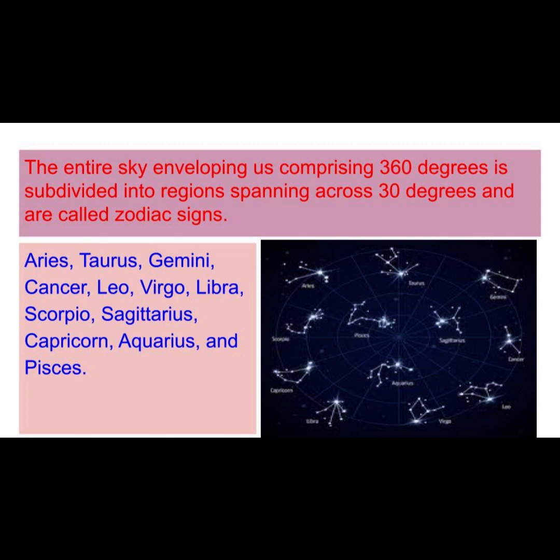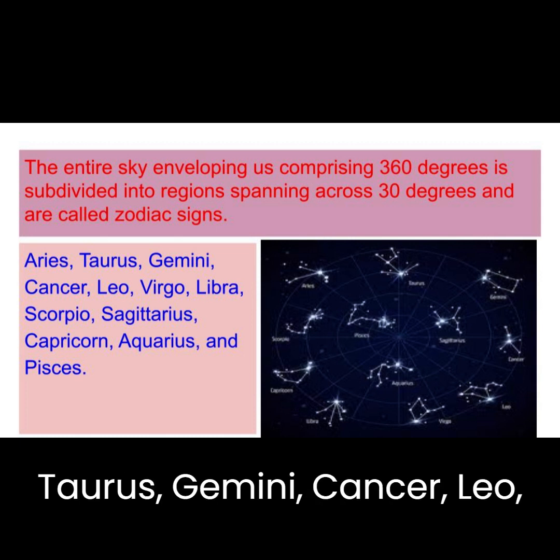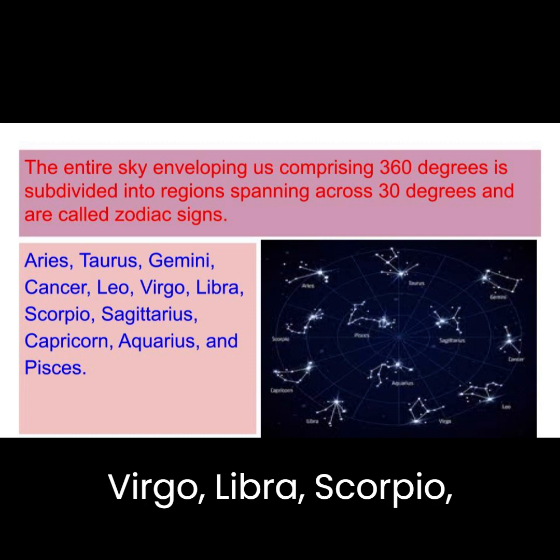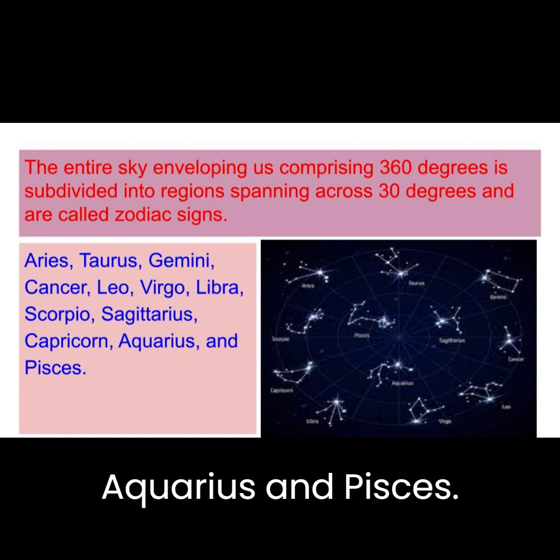The twelve signs of the zodiac are Aries, Taurus, Gemini, Cancer, Leo, Virgo, Libra, Scorpio, Sagittarius, Capricorn, Aquarius, and Pisces.